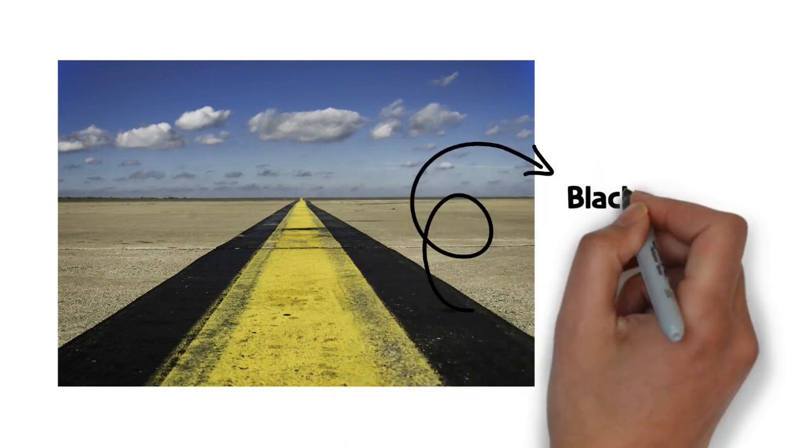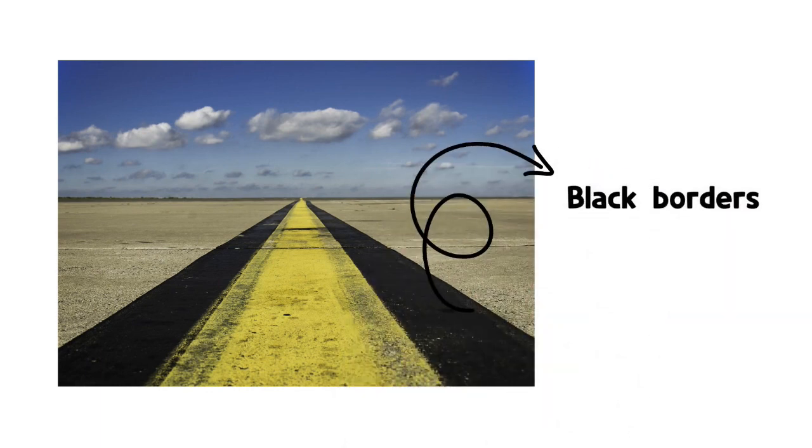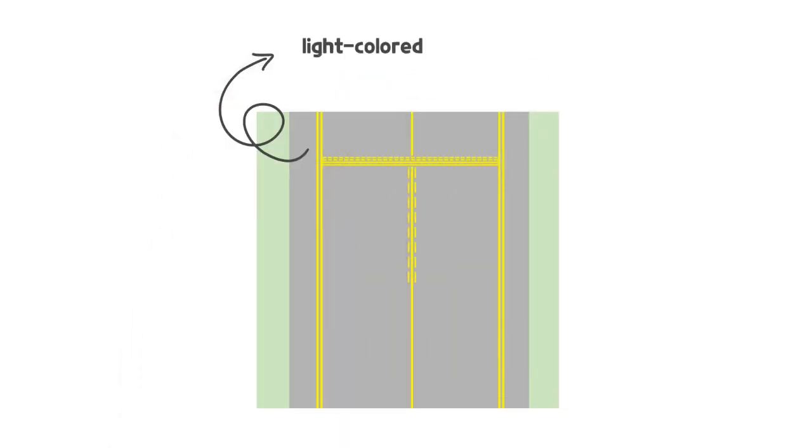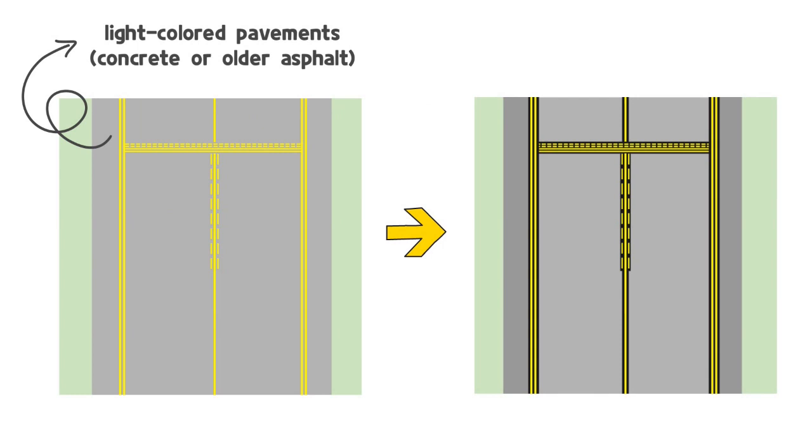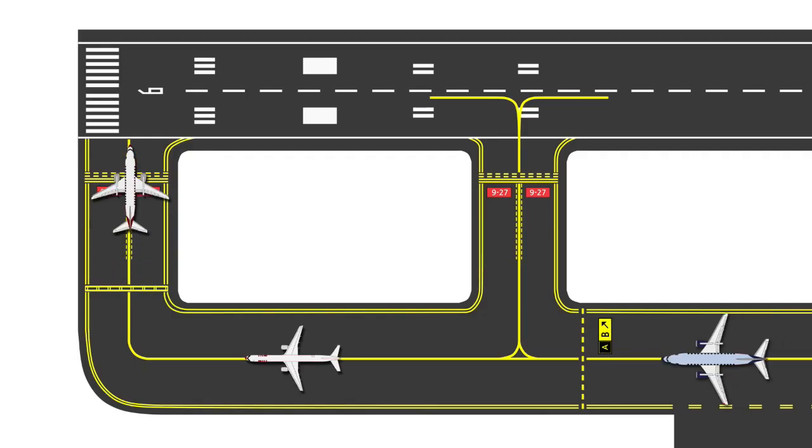At most airports, taxiway markings can be seen with black borders on the edges. Markings on surfaces with light colored pavements such as concrete or older asphalt are not well identified, therefore they can be clearly distinguished with a black border. That's it for this video today.